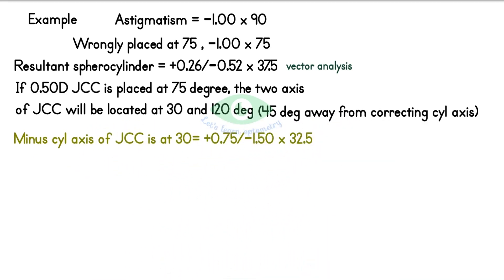The resultant power is plus 0.75 with minus 1.5 at 32.5 degrees. When the minus cylinder of the JCC axis is at 120 degrees, the resultant power is plus 0.26 with minus 0.52 at 112.5 degrees.